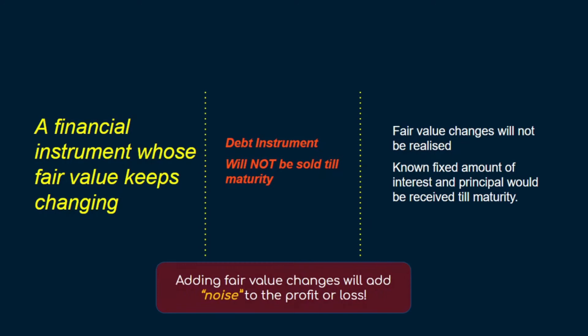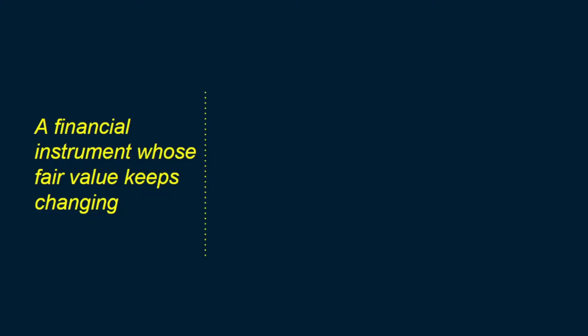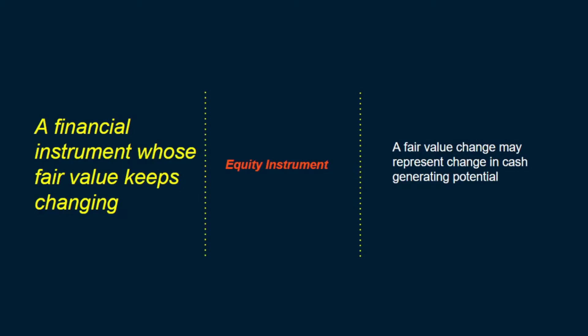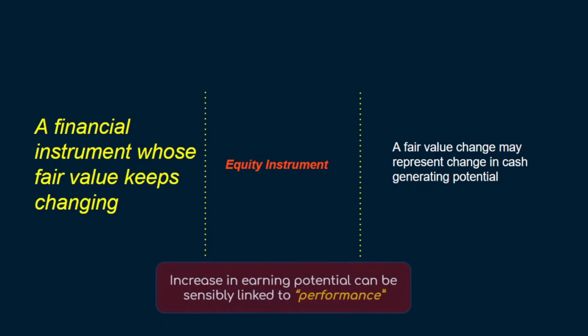Given those assumptions, if you recognize the change in fair value of that asset in profit or loss, would that not add extra noise to the performance of the entity? Why should we reflect fair value changes in profit or loss when we know that we would be receiving known fixed amounts till maturity? On the other hand, if that same asset were not a debt instrument but an equity instrument, the fair value increase might reflect that the entity has actually performed well and is likely to earn better and pay higher dividends in the future. So in the case of an equity instrument, fair value changes have the potential to increase or decrease future cash flows, and therefore it makes more sense to recognize them in a statement of income.